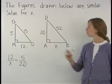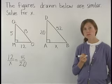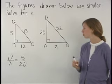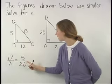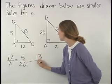Next, notice that side QO corresponds to DB. This means that we have the ratio 13 over 52, so 12 over X is equal to 5 over 20 is equal to 13 over 52.